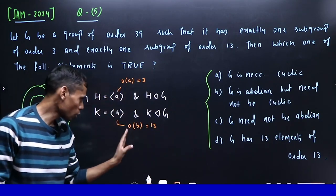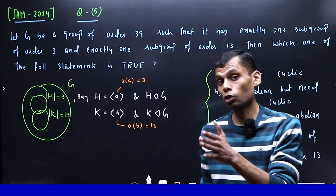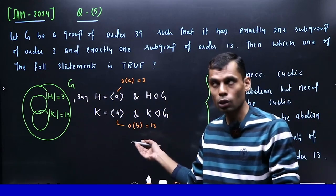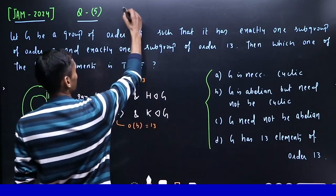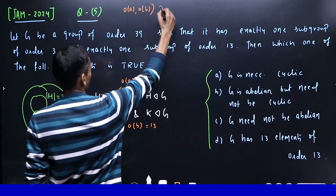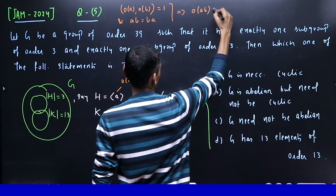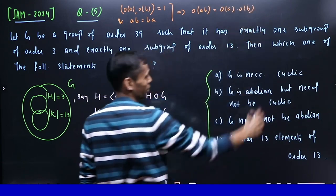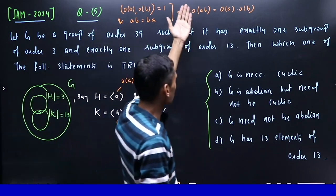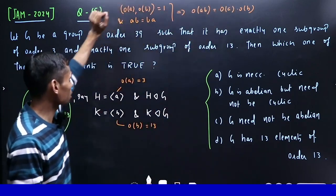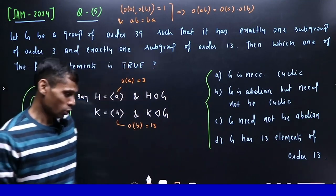H has order 3, meaning a has order 3. K has order 13, meaning b has order 13. We need a result: order of ab equals order of a times order of b. When does this happen? The result requires two conditions - orders must be coprime and elements must commute.